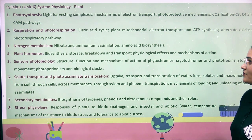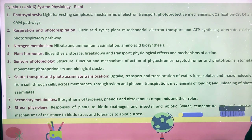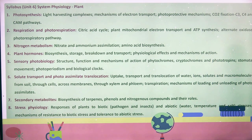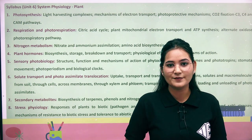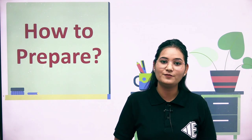The sections are: photosynthesis; respiration and photorespiration; nitrogen metabolism; plant hormones; sensory photobiology; solute transport and photoassimilate translocation; secondary metabolites; and stress physiology. So the total is 8 sections, with around 45 to 50 topics overall.